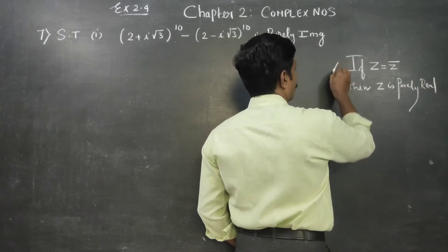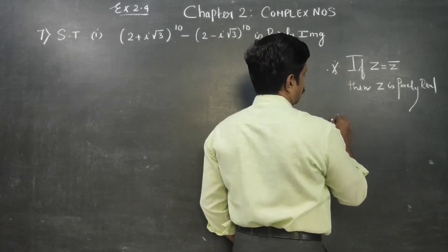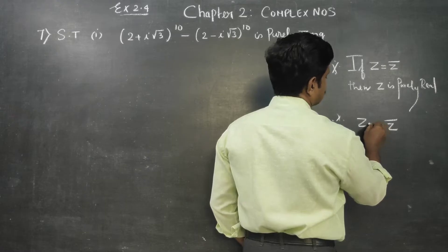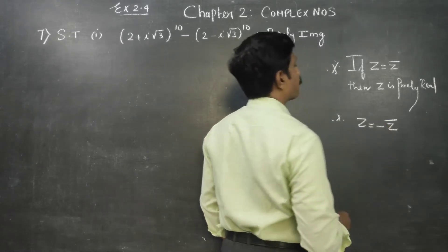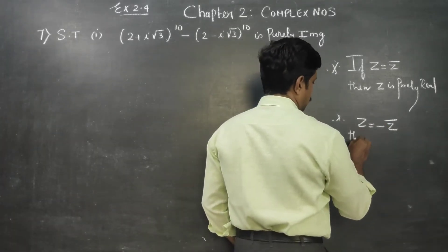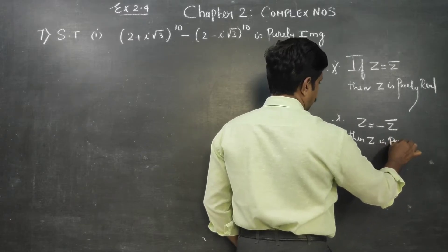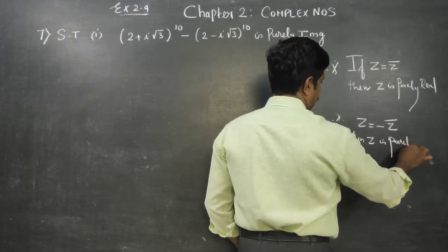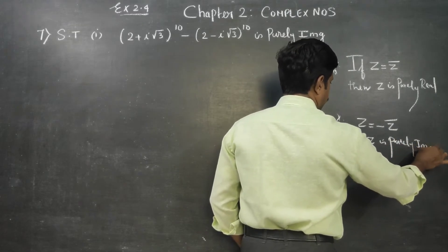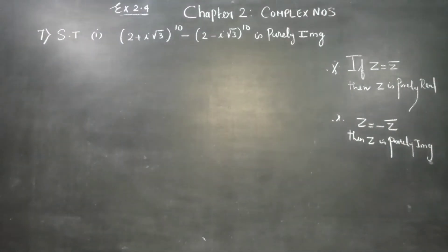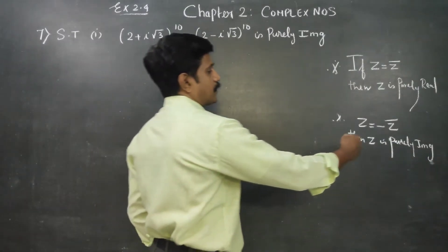Another formula: if Z is equal to minus Z-bar, then Z is purely imaginary. These are two important results. If Z equals Z-bar, then Z is purely real. If Z equals minus Z-bar, then Z is purely imaginary.